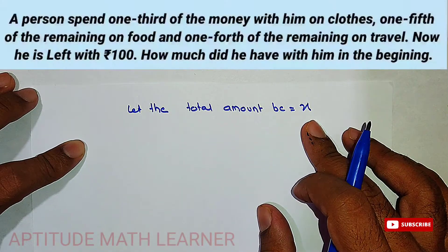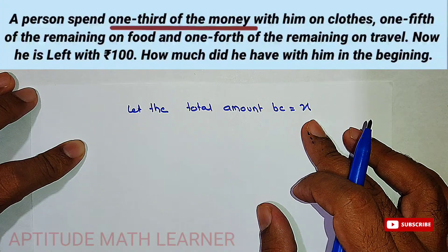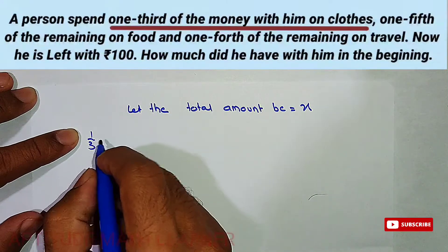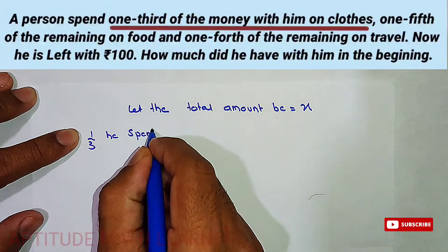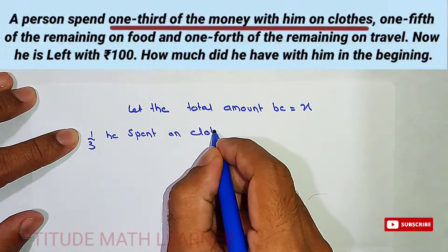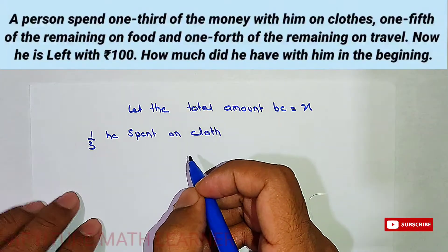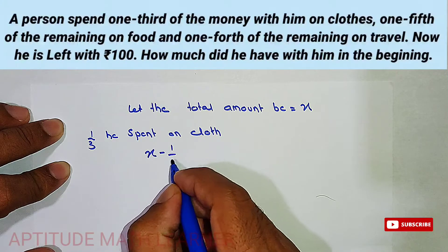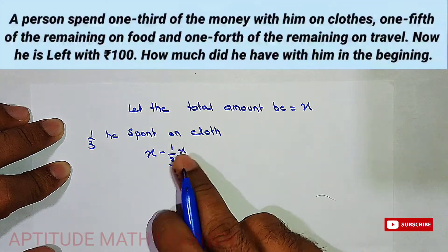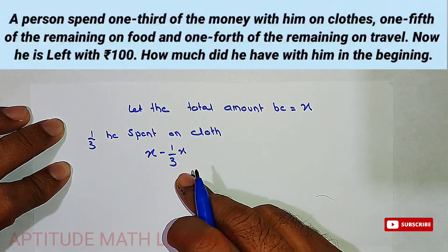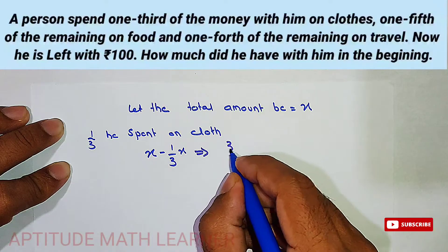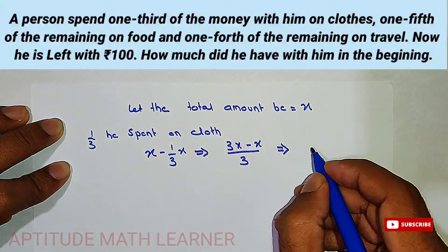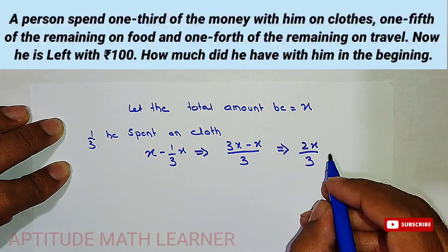The question says he spent one-third of the money on clothes. So the remaining after spending on clothes is x minus one-third of x, which gives us 3x minus x upon 3, that is 2x upon 3. This is the remaining amount after spending on clothing.